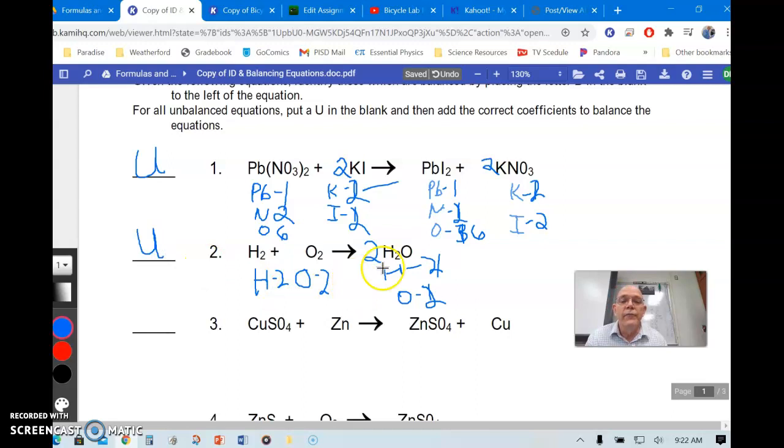Now we have 4 hydrogens, but we only have 2. Our oxygens are good, but our hydrogens are off. We only have 2 hydrogens over here, so we need to put a 2 right here, which would give us a total of 4 hydrogens. And now we have 4 hydrogens, 2 oxygens, 4 hydrogens, 2 oxygens. It's balanced. So it would take 2 hydrogen molecules joined with an O2 molecule or oxygen, and that would give us 2 molecules of water, and that would be balanced.